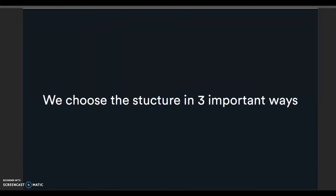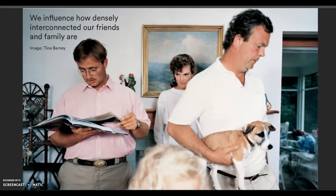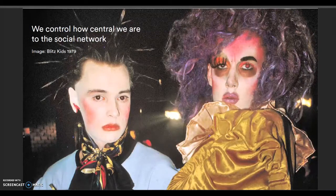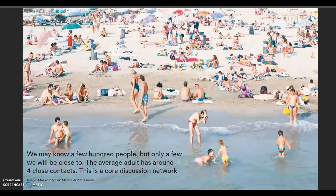We choose the structure of the network in three important ways. We decide how many people we are connected to. We influence how densely interconnected our friends and family are. We control how central we are to the social network. We may know a few hundred people, but only a few we will be close to. The average adult has about four close contacts — this is called a core discussion network.